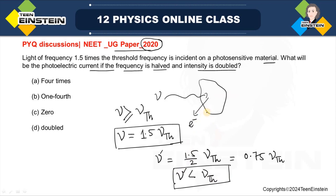So if there is no photoelectric effect happening — no emission of electrons — then how do we get current? We will not get any current. The photoelectric current will be zero if the frequency of the incident light is halved. Thank you.